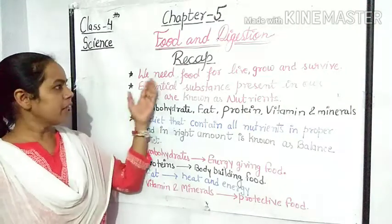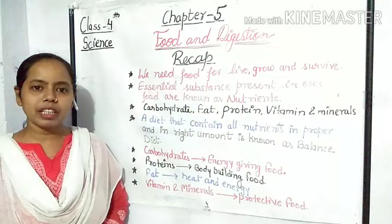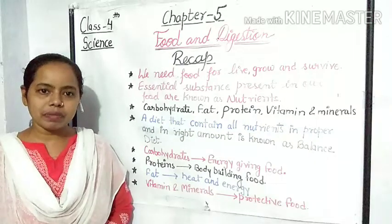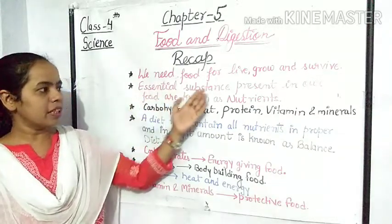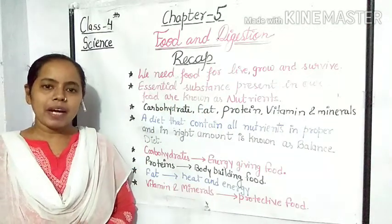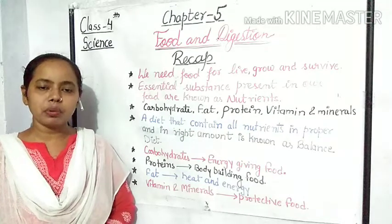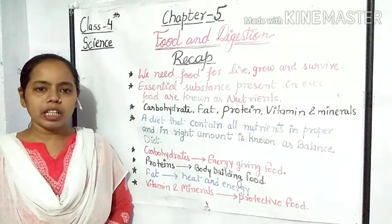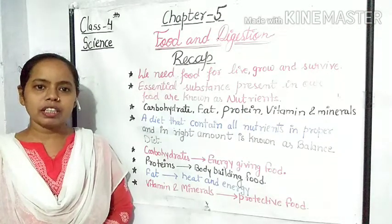Students, we need food to live, grow and survive. Essential substances that are present in our food are known as nutrients. Carbohydrate, fat, protein, vitamin and minerals are the examples of essential nutrients.